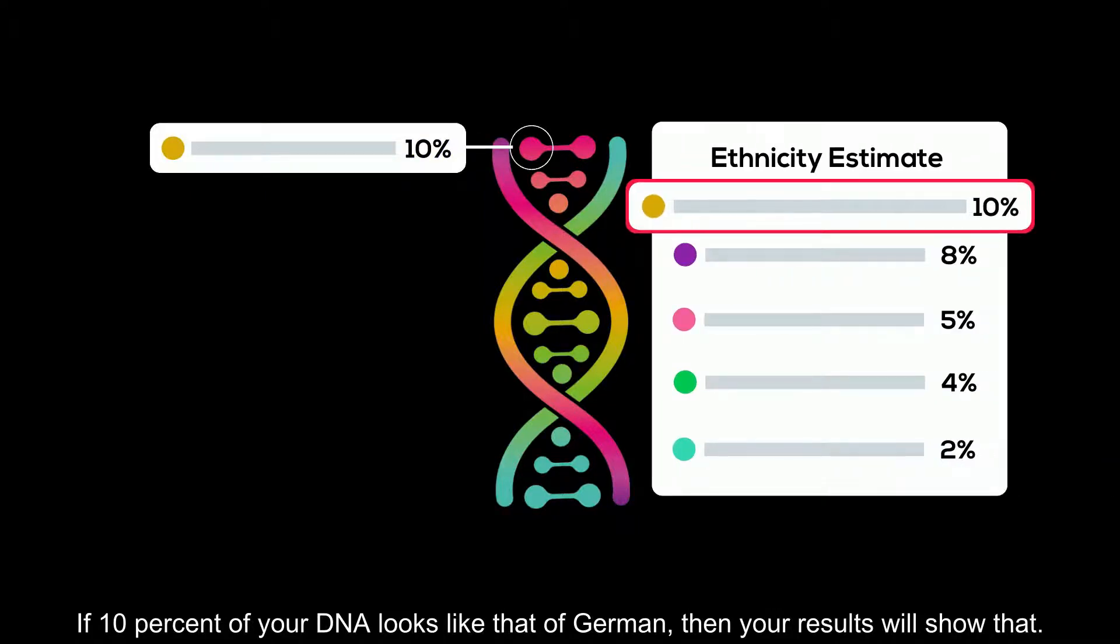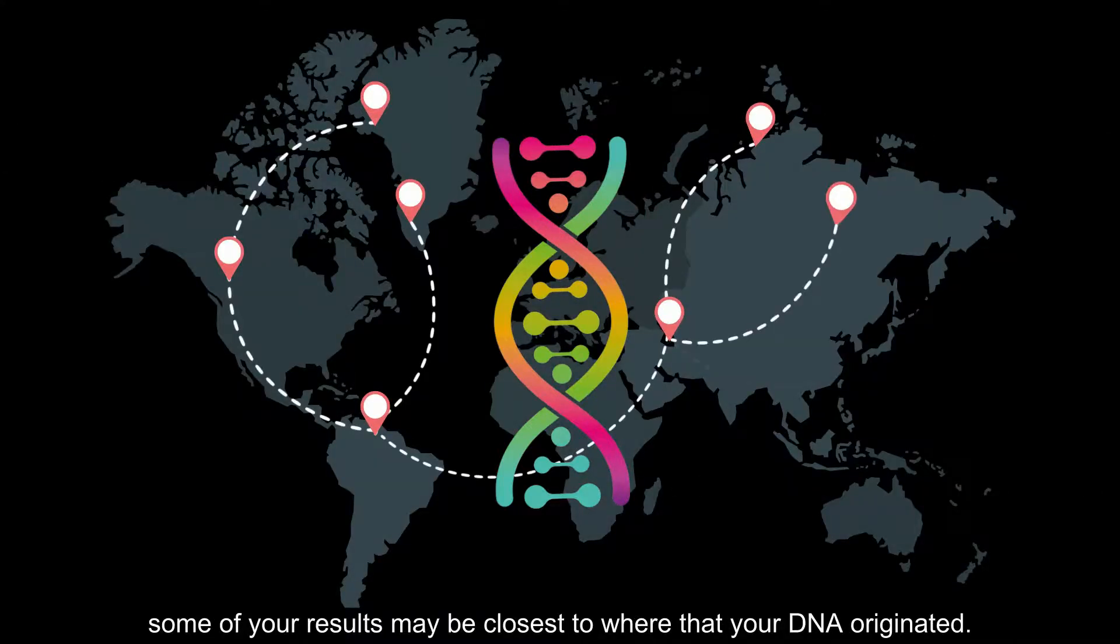If 10% of your DNA looks like that of German, then your results will show that. Because your ancestors didn't always stay in one place, some of your results may be closest to where your DNA originated.